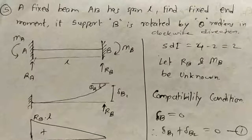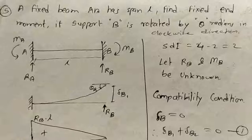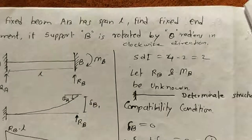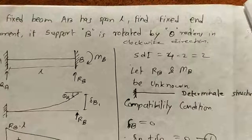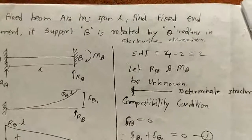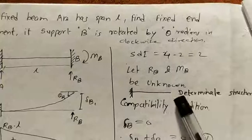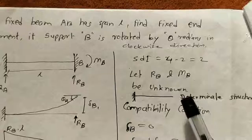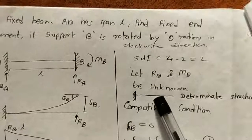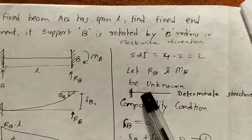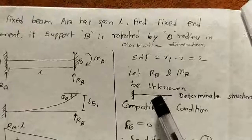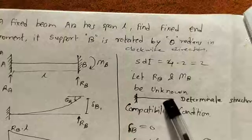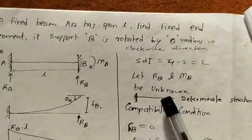Next, we consider RB and MB as the unknowns. We will remove RB and MB; because of their removal we are getting a determinate structure. The next step is to apply loading on this beam, but in this example there is no applied load, so we move to the next step.